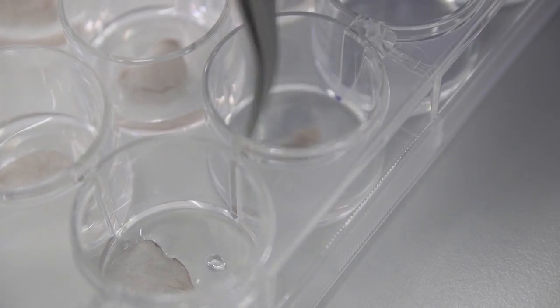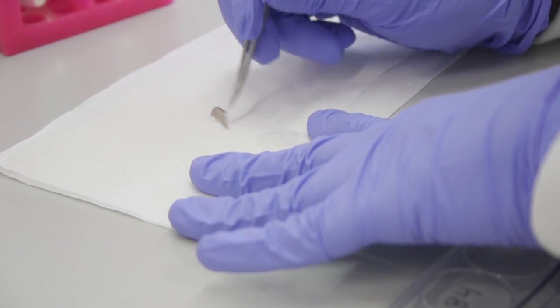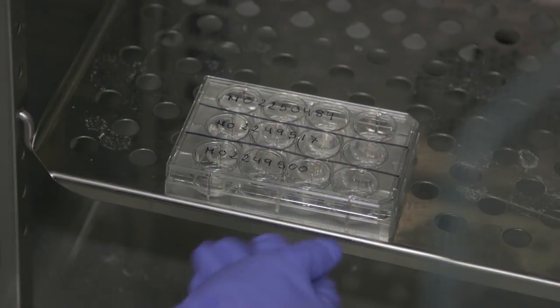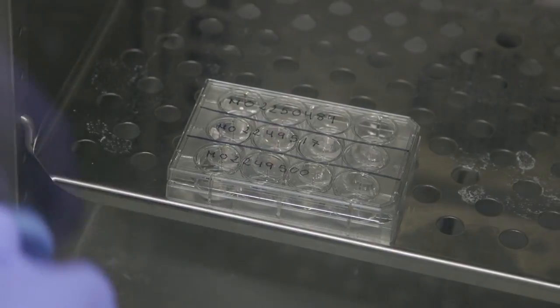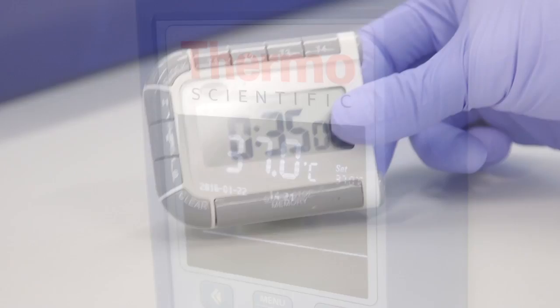If the ear half is placed the wrong way up, it will likely sink. If this happens, the ear should be dried off and placed back onto the ammonium thiocyanate the correct way up. Once all samples have been transferred to the plate, it should be incubated at 37 degrees Celsius for 35 minutes.